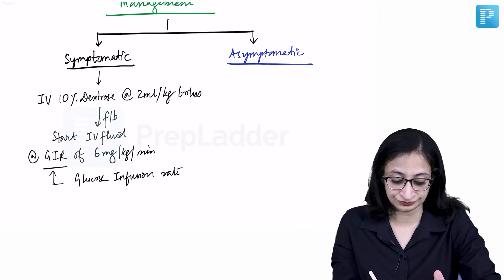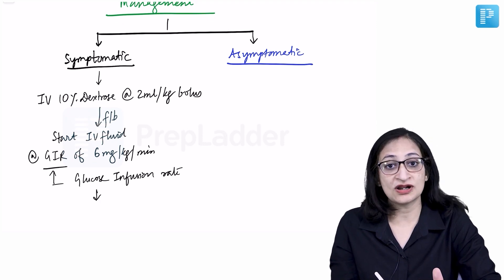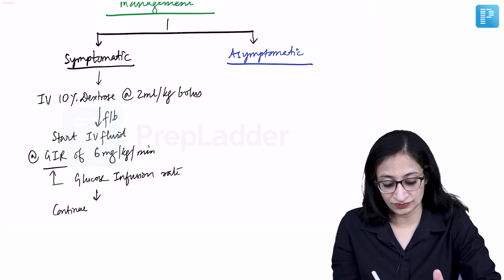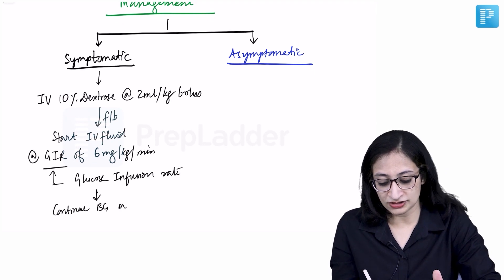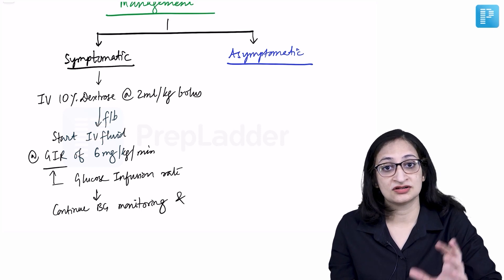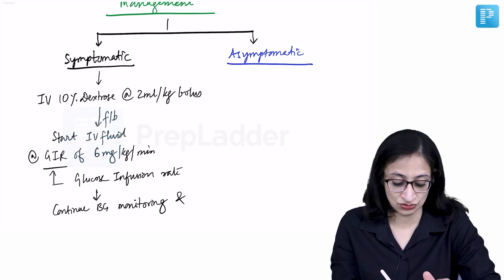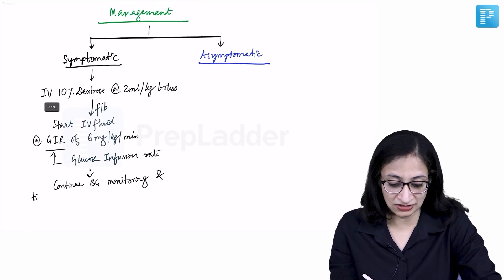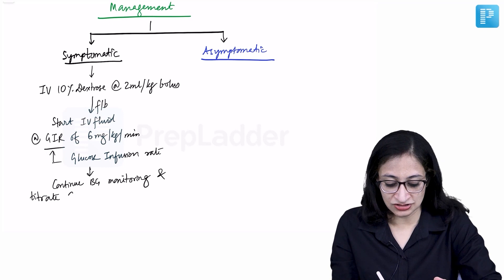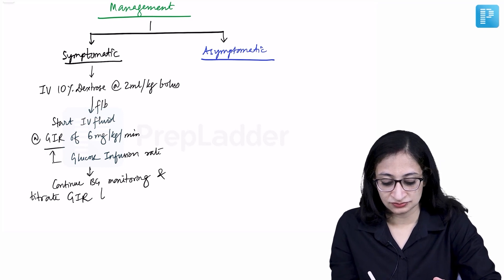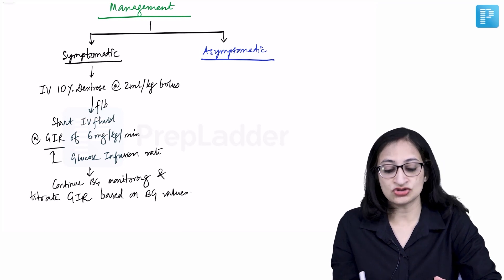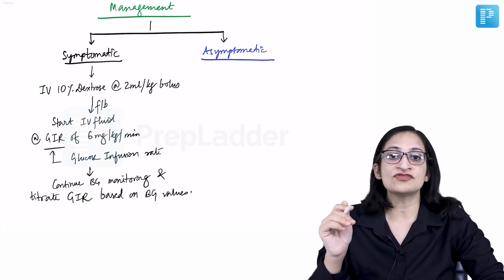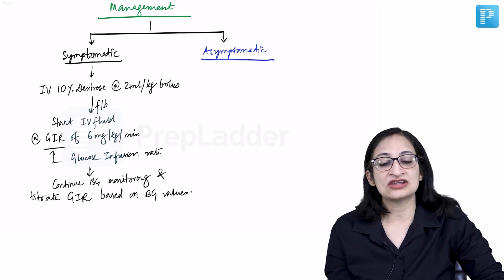You must continue blood glucose monitoring and titrate the IV fluid rate based on blood glucose values. If blood glucose comes into the normal range, gradually decrease the GIR and stop IV fluids. That is how you manage a symptomatic baby.